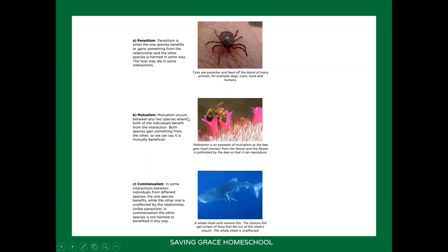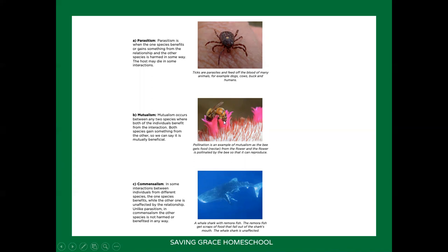Then you get mutualism, where both species benefit — so you say they are mutually beneficial. An example is bees and flowers: pollination is an example of mutualism. The bee gets food — it gets nectar from the flower — and the flower is pollinated by the bee so that it can reproduce. So both species benefit from this relationship.